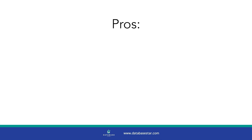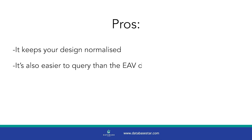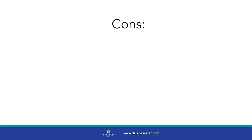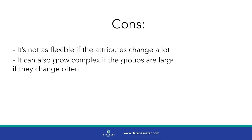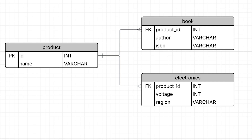There are a few benefits to this option. It keeps your design normalised, like the first option, which means you can enforce data types and constraints. It's also easier to query than the EAV design. However, the drawbacks are that it's not as flexible if the attributes change a lot, and it can also grow complex if the groups are large or if they change often.